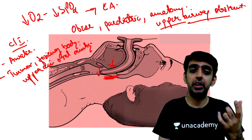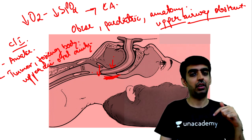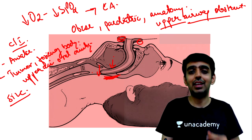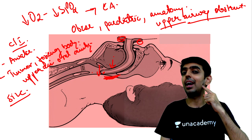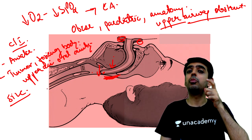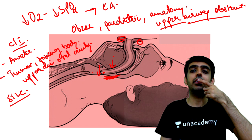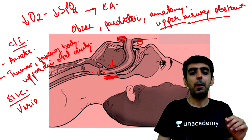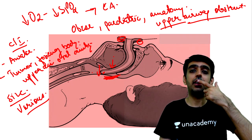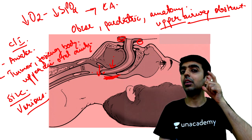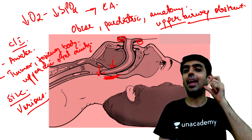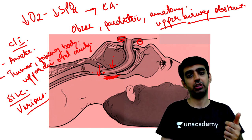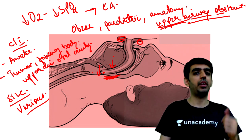If a foreign body is present, inserting the airway may cause bleeding or push the foreign body further inside. To measure the correct size: the flange should abut the lips and the tip should reach the angle of the mandible. It comes in various sizes and is used to maintain the patency of the upper airway.